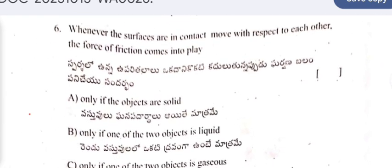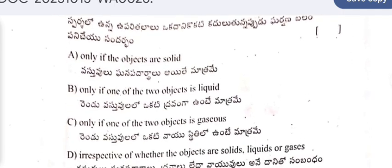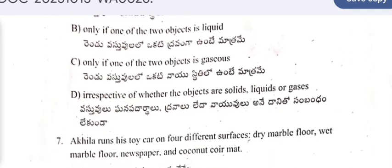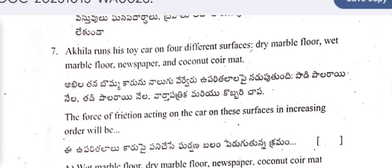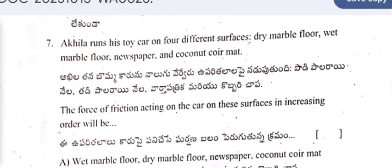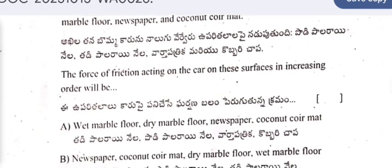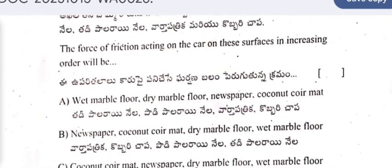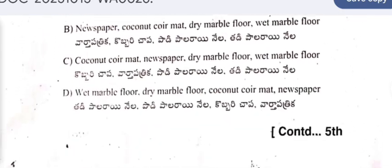Question 6: Whenever the surfaces are in contact with respect to each other, the force of friction comes into play. A toy car is placed on four different surfaces: dry marble floor, wet marble floor, newspaper, and coconut coir mat. The force of friction acting on the car on these surfaces in increasing order will be?